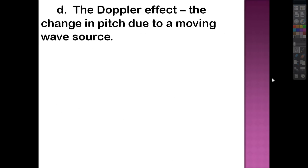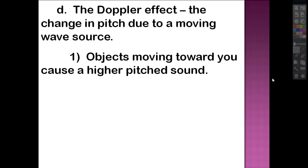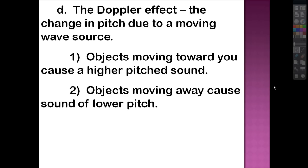We also have something called the Doppler effect. The Doppler effect is the change in pitch due to a moving wave source. So either the person producing the sound is moving, or the thing producing the sound is moving. Or they can both be moving, which makes the equation even harder. So objects moving toward you cause a higher pitch sound. If you ever stand by some railroad tracks, not on them because that would hurt, and a train is coming towards you, the sound starts kind of low. And then as the train gets closer, it gets higher and higher and higher and higher until it reaches you. And then as it passes you, it's moving away, and the sound changes to a lower pitch. Try it.